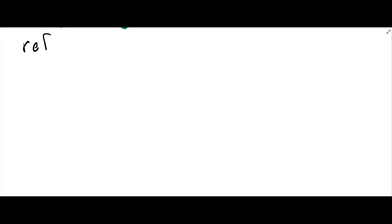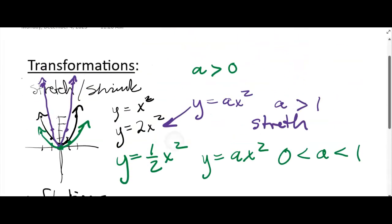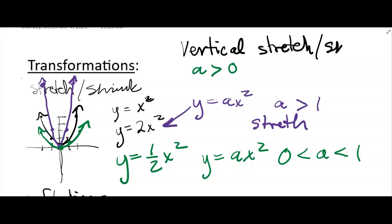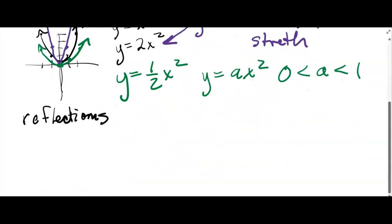That's stretching and shrinking. I'm going to review these at the end of this set of videos in the summary of transformations. These were vertical stretches and shrinks. You can also have horizontal ones, so let me wait on the reflections and talk about the horizontal ones.